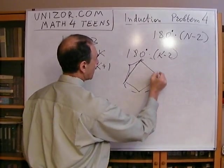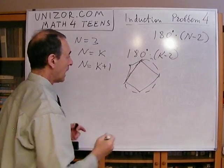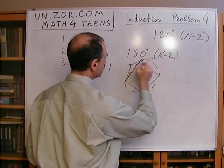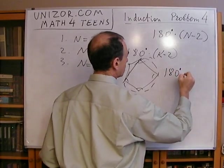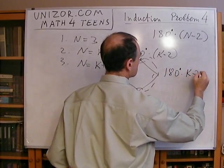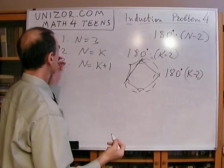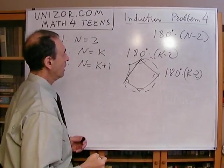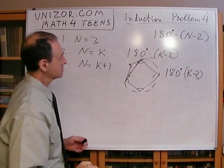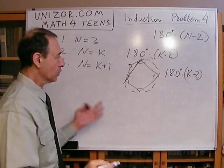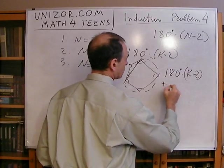And I know that the formula for all these angles is 180 times k minus 2 by our assumption, which is number 2. And what do I add? I add these three angles of a triangle, which is always 180, so I have to add 180.